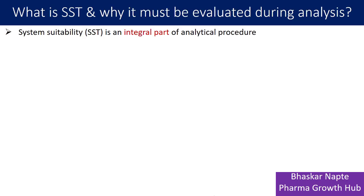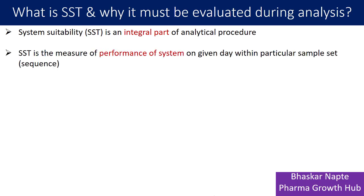According to USP General Chapter 621, which is about chromatography, system suitability is described as an integral part of the analytical procedure. It is very much part of analytical procedure and you cannot separate system suitability from analytical procedure like chromatography conditions.